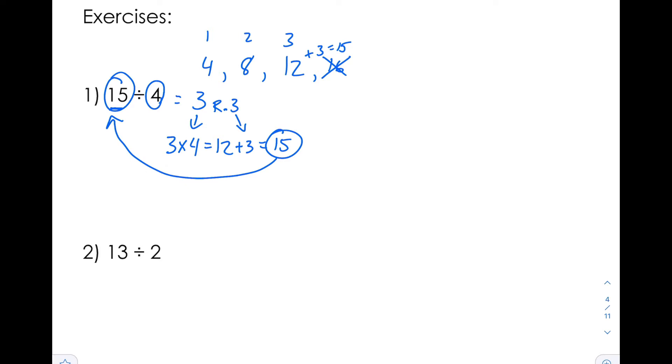For 13 divided by 2, we're going to skip count by 2. We have 2, 4, 6, 8, 10, 12. If we went any more, we'd be over 13. So let's count how many times we counted: 1, 2, 3, 4, 5, 6. The answer is 6, and we have to add one more to get to 13, and that's our remainder. So 6 remainder 1. Let's check our answer. 6 times 2 is 12. 12 plus 1 is 13. So that way we know the answer is correct.